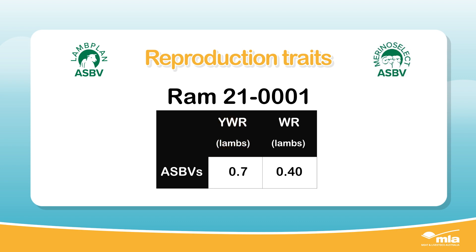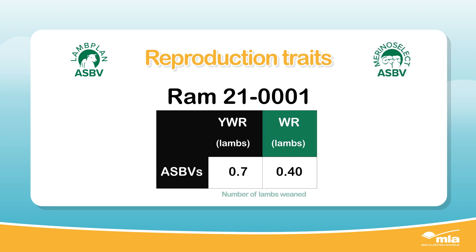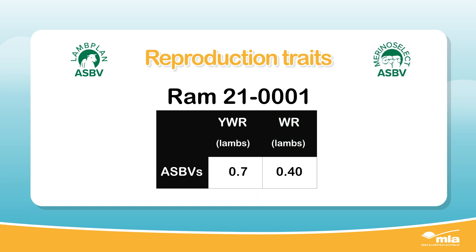The adult reproduction trait is expressed as WR and refers to the performance of ewes from two years of age and older. WR is the number of lambs weaned and is expressed in units of lambs. This ASBV combines multiple reproduction traits observed during the reproductive cycle into one simple trait that is easy to understand.